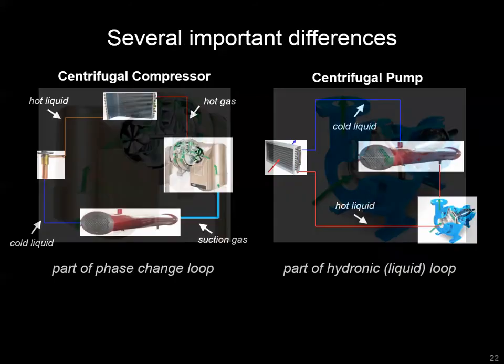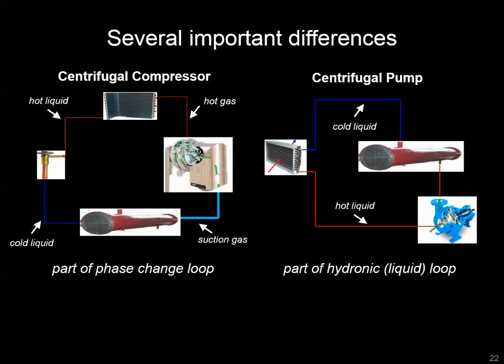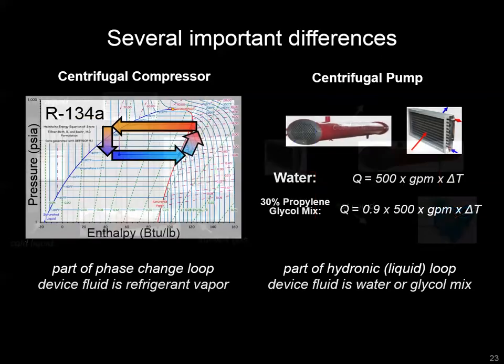There are a number of differences between the two devices. Maybe the most obvious is that the centrifugal compressor is part of a phase-change loop, where you're oscillating between the vapor and liquid phase, whereas a hydronic loop stays in the liquid phase — changing between a relatively cold and relatively hot liquid as it moves between those heat exchangers.